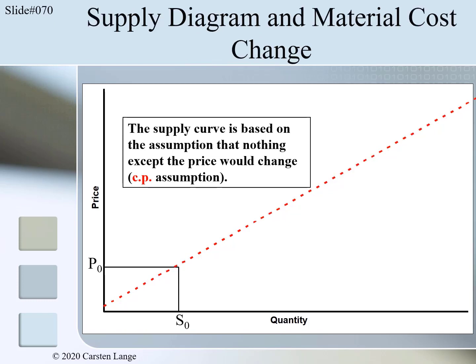The same is true for all other determinants of supply with the exception of the price. In other words, the supply curve is based on the assumption that nothing except the price would change. This is called the Ceteris Paribus assumption and we covered this in detail in Module 4 of this chapter. So we can summarize, and this is very important: if any determinant of supply other than the price changes, the red line in the diagram would not represent the market supply anymore. The correct curve will be somewhere else in the diagram. We do not know exactly where the new curve is located, but we can find out if it is to the right or to the left of the original curve.